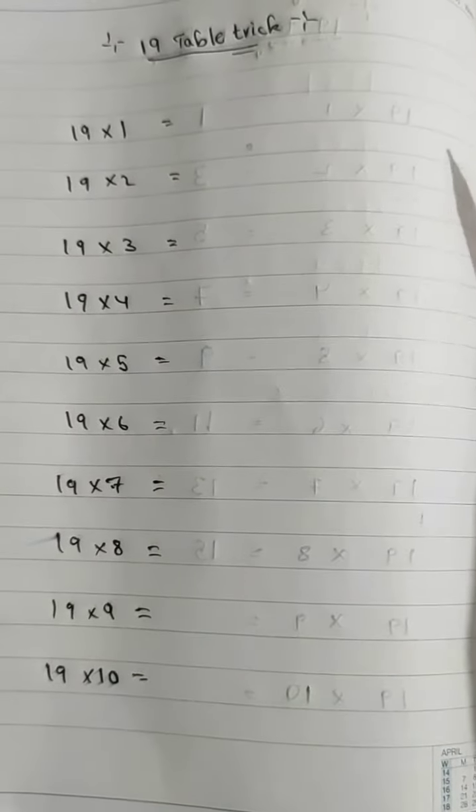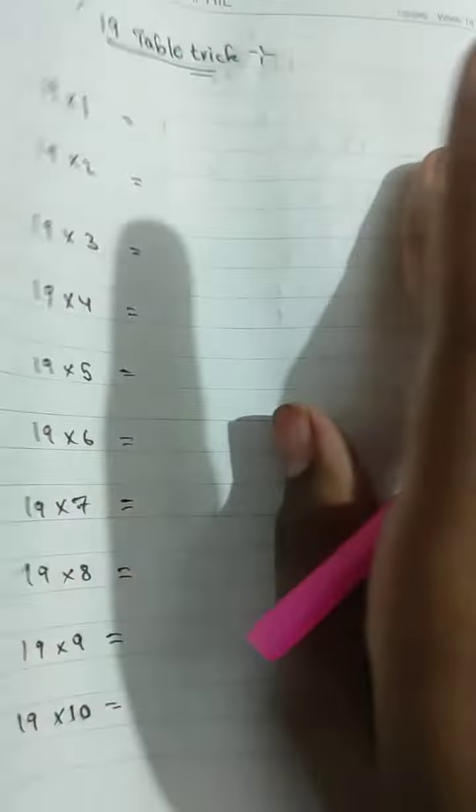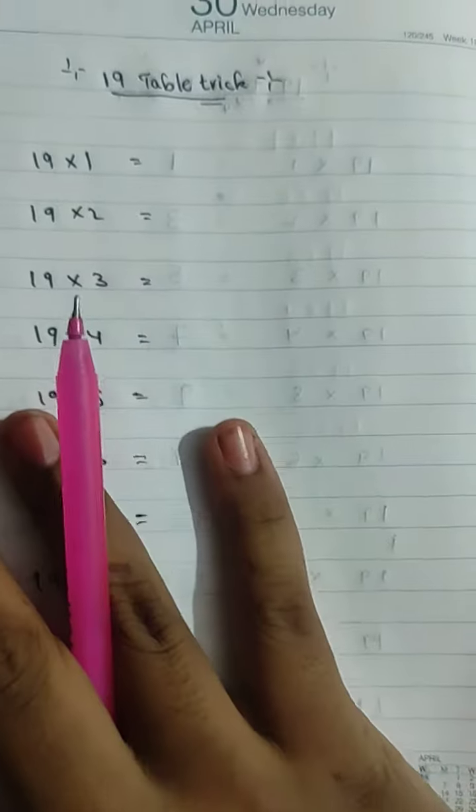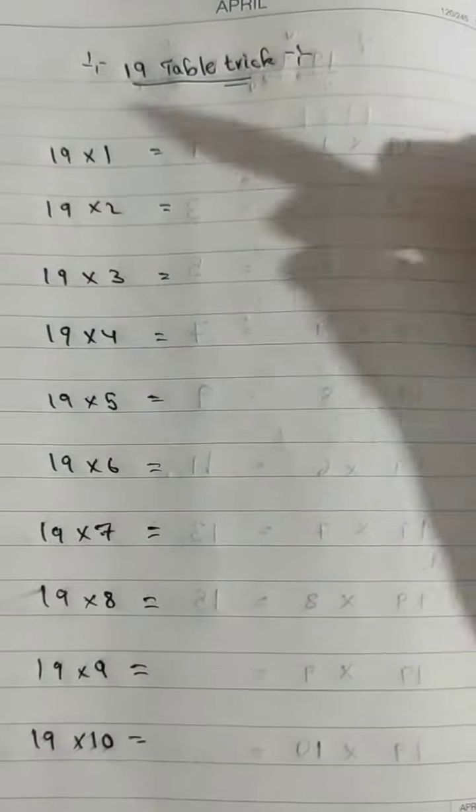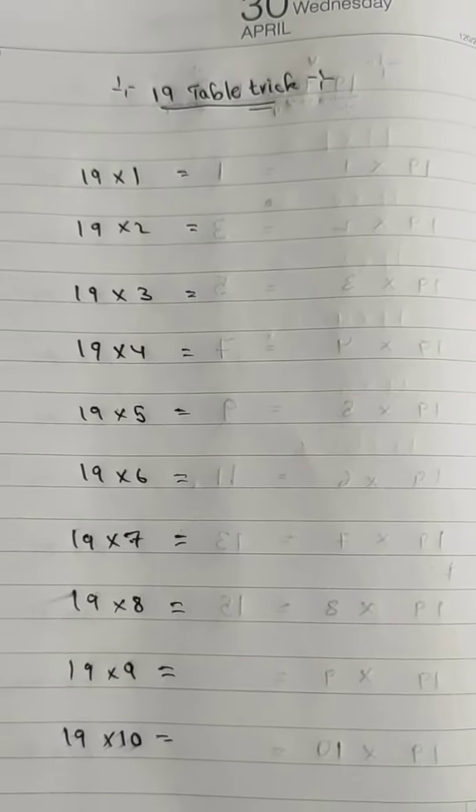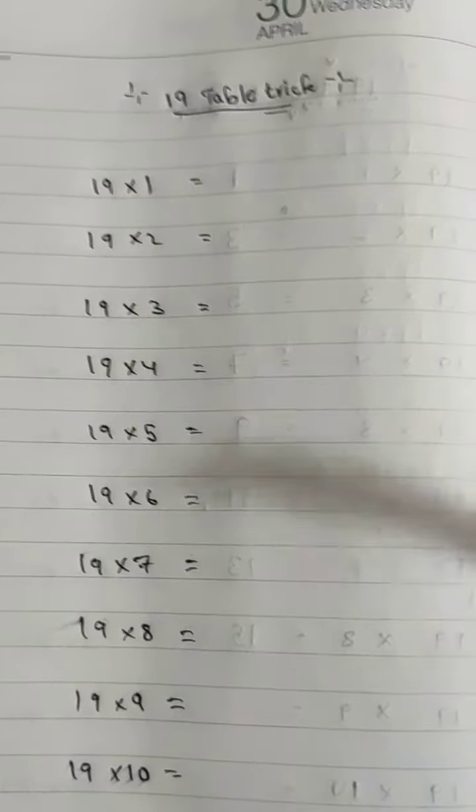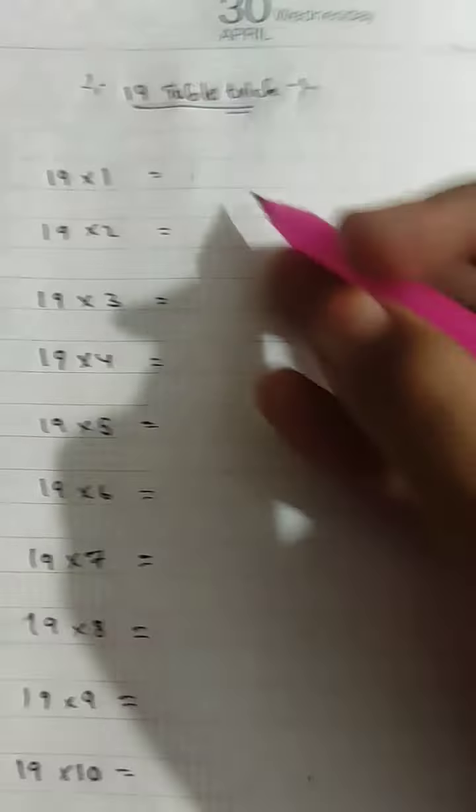Hey guys, today I am going to tell you a trick to the 19 table. First of all, we need to write digits—not only digits, but numbers, leaving one behind another like this.